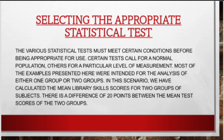Selecting the appropriate statistical test: The various statistical tests must meet certain conditions before being appropriate for use. Certain tests call for a normal population; others require a particular level of measurement. Most of the examples presented here were intended for the analysis of either one group or two groups. For instance, we have calculated the mean library skills scores for two groups of subjects, and there is a difference of 20 points between the mean test scores of the two groups.